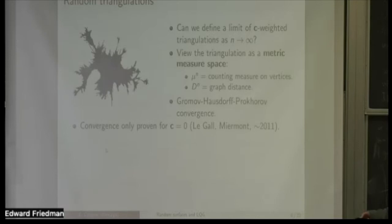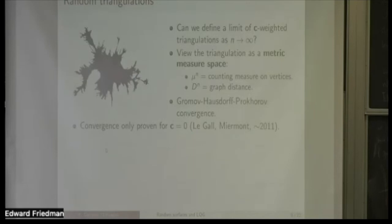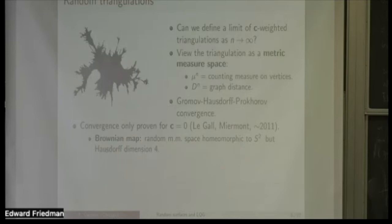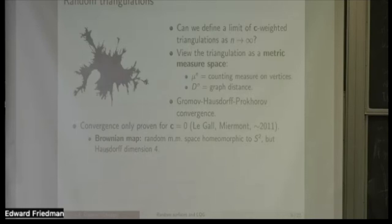Do our random triangulations converge in distribution with respect to this Gromov-Hausdorff-Prokhorov topology? The answer is yes in the case when c equals zero, equivalently for uniform triangulations. This is a very hard result proven by Le Gall and Miermont circa 2011. The limiting object is a random metric space called the Brownian map, which is almost surely homeomorphic to the sphere, but with very different geometry — for example, the Hausdorff dimension of this metric space is four.